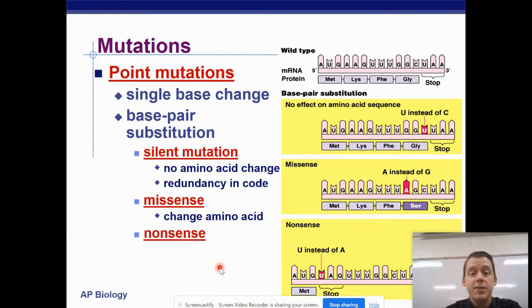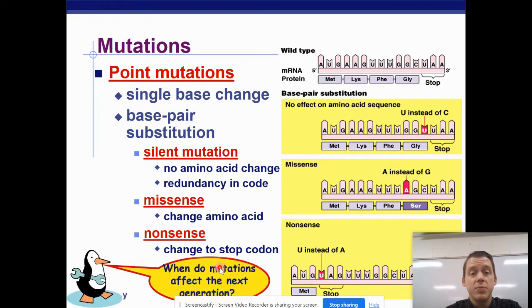And then we have a nonsense mutation. And a nonsense mutation is pretty easy to understand. A nonsense mutation will change a codon to a stop codon. So we see that down here at the bottom, AUG, methionine, followed by UAG. It should be AAG, but instead it's an early stop codon. And that is going to stop the protein.